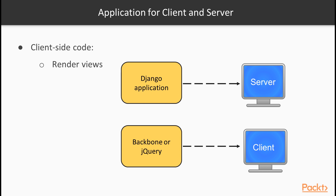This has been the case for the last few years, and it is still the way to go for a huge number of applications. For years, we used to have completely different applications for the server and client. For example, a Django application to render the views on the server and some JavaScript frameworks such as Backbone or jQuery on the client.